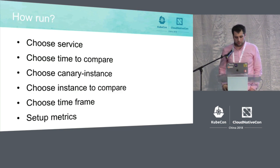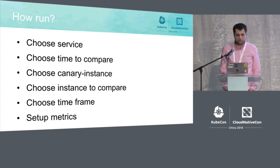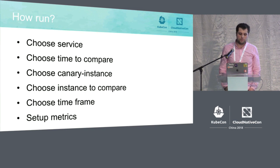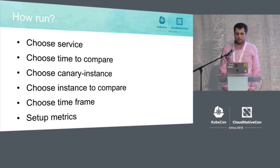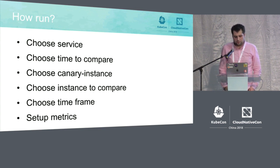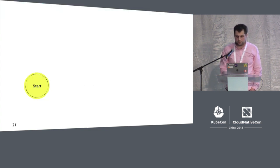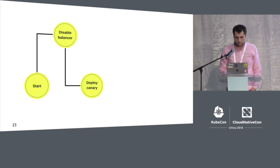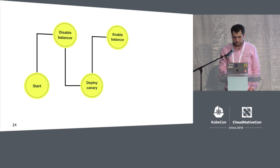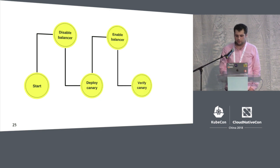How should we run it? We choose the service we want to deploy, choose the time window during which we will compare versions, choose the Canary instance and the instance to compare, and set up a time frame and metrics. The process works as follows: start deployment, disable the balancer, deploy the Canary node, enable the balancer, and start verifying.